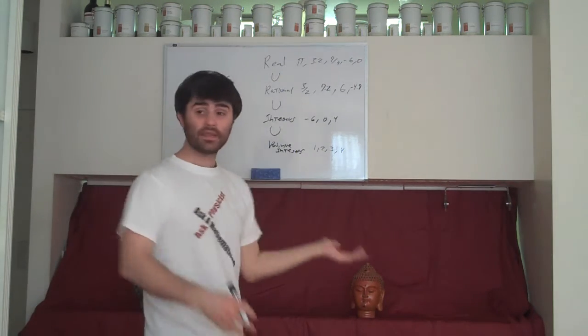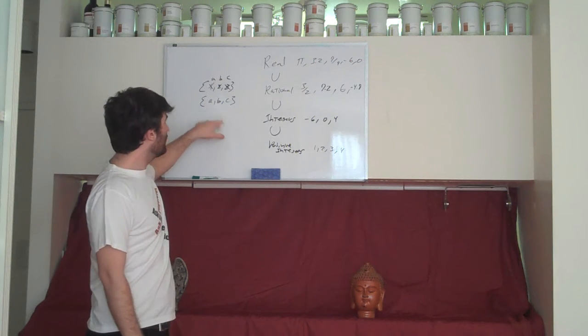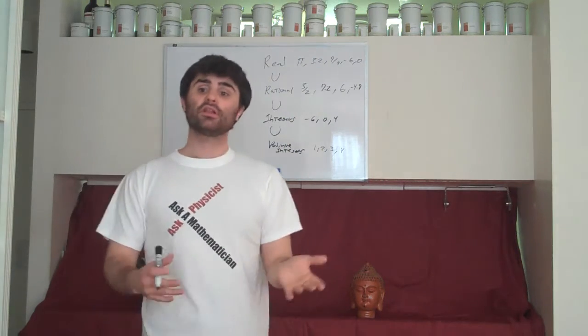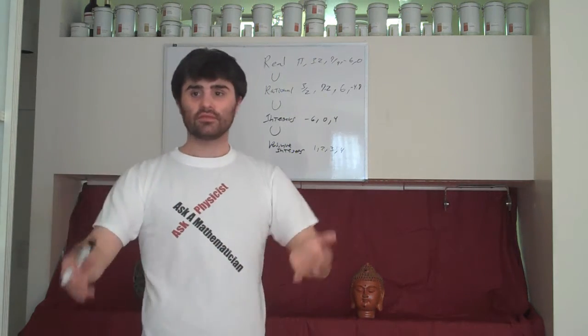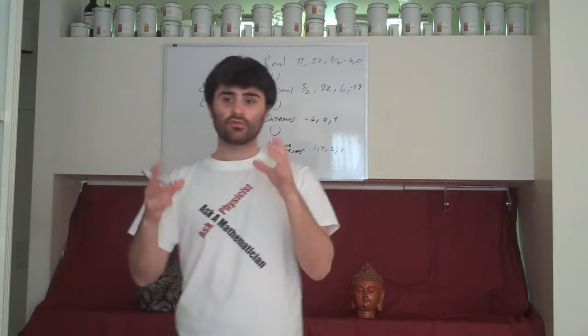And once again, renaming can't change the number of elements. So if this set is equivalent to this, but it only differs from one, two, three by renaming the elements, clearly one, two, three has to have the same size as a, b, c. So now we're going to apply the same idea of measuring the relative size of sets, but we're going to apply to these infinite sets.